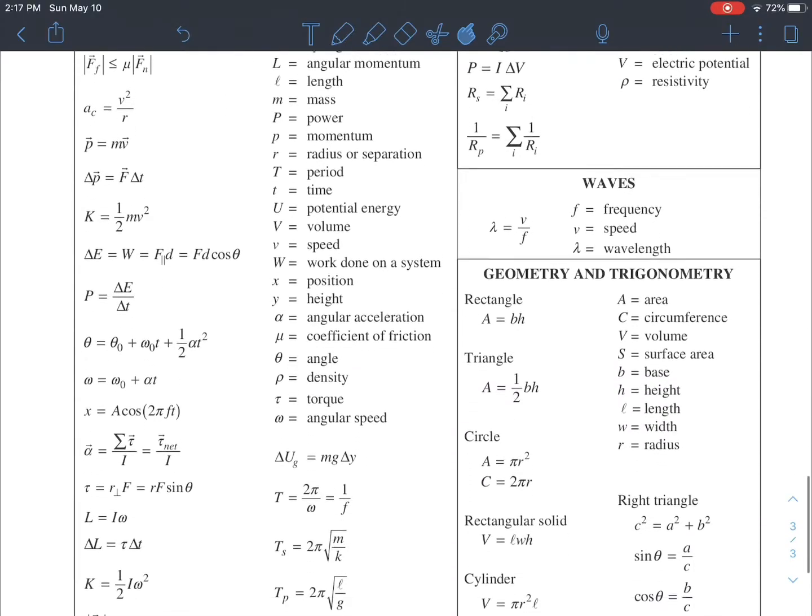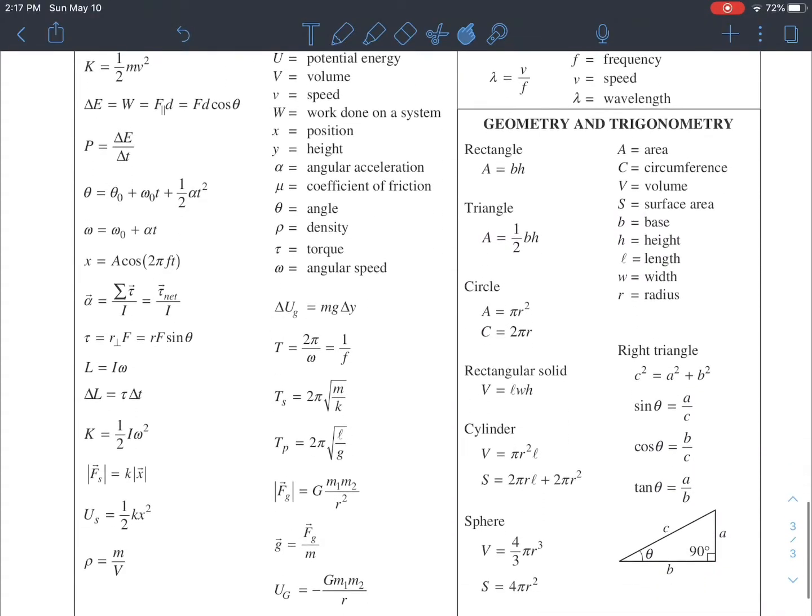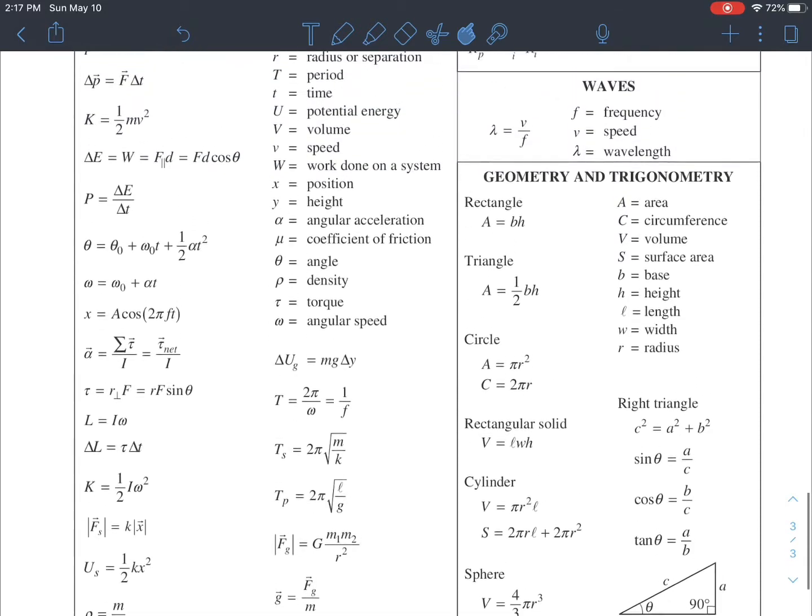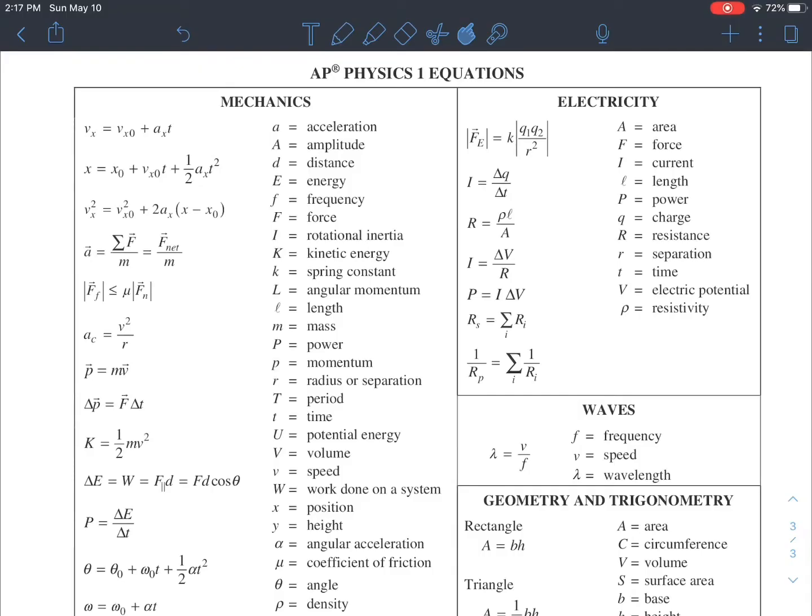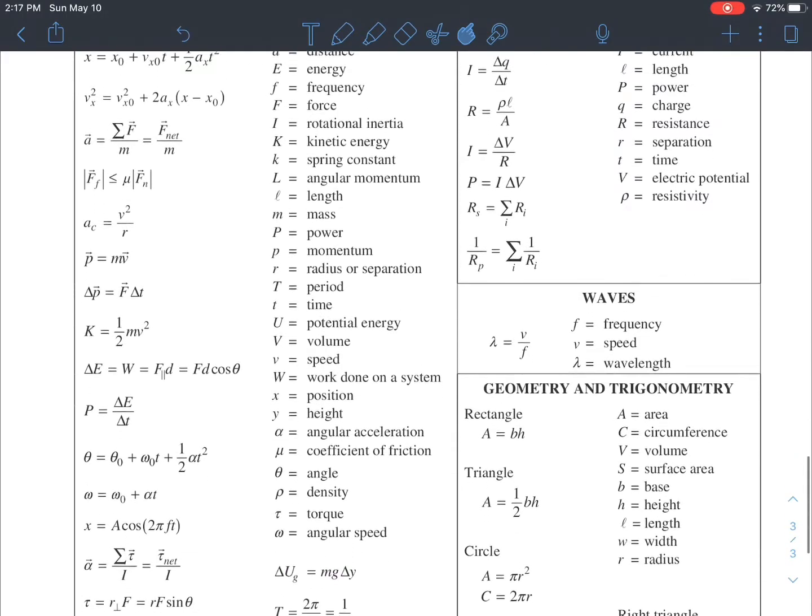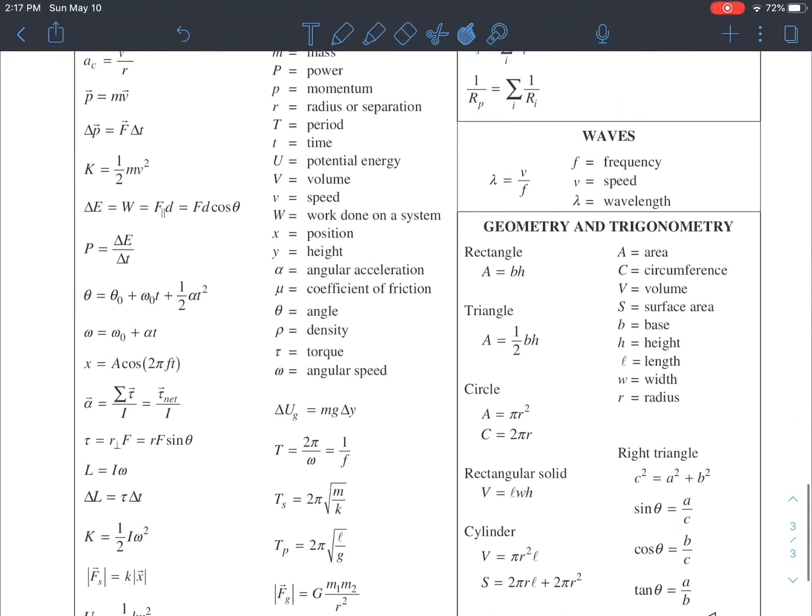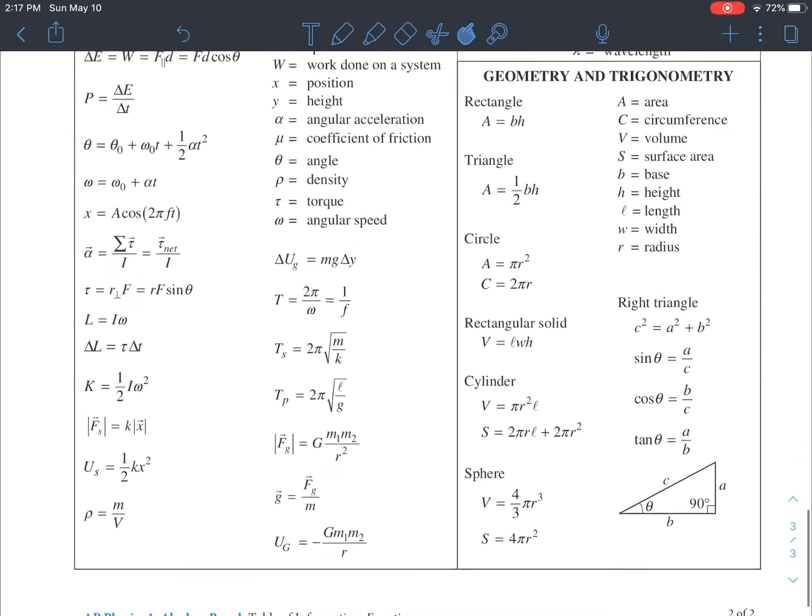First, I'm just showing you the formula sheet. In physical form, it is a single piece of paper, front and back. On the front you have things like constants and prefixes, and on the back you have all the equations that you need for each type of unit.